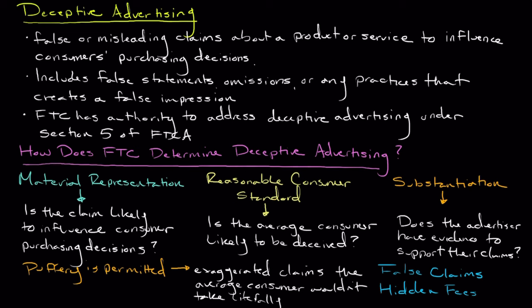When the FTC identifies deceptive advertising, it can take a variety of courses of action, including cease and desist orders, pursuing civil penalties, and corrective advertising — in an attempt to rectify the deceptive impressions that were created.